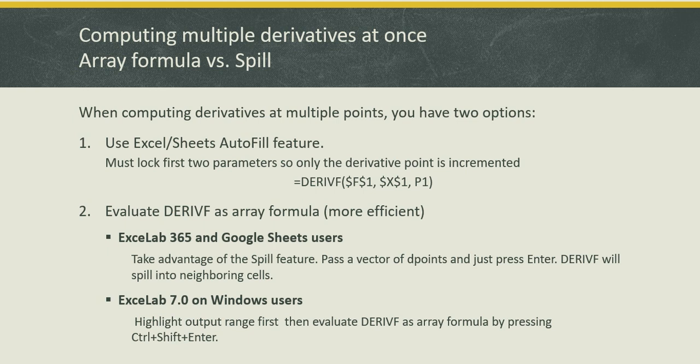Now you have multiple choices here to do that. If you're working on Windows PC you can do that with autofill feature the same way we've generated these points. However if we're going to use the autofill feature it's important to lock in the first two parameters for derivative function and you do that with the dollar sign syntax. You can lock in the column and the row number or either one. In this case I'm locking both of them so when I use the autofill Excel will only increment my points in the third parameter but will leave these intact.